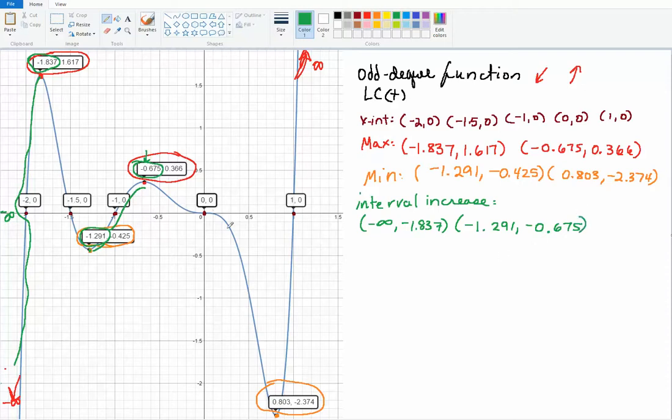So from when x was negative 1.291 all the way to negative 0.675, the function was increasing. Then it's decreasing, decreasing. And then when it hits this x value right here, it starts increasing again. So from 0.803 until when x is positive infinity, because x is just getting bigger and bigger. The function keeps on going up and up and up. So until positive infinity. And those would be your intervals of increase.